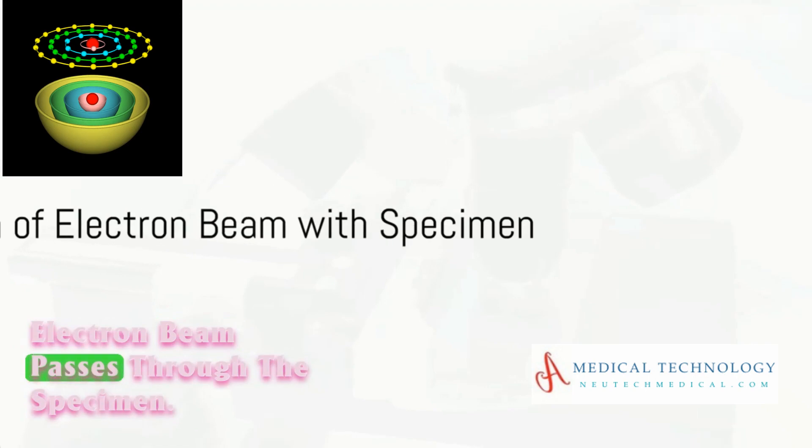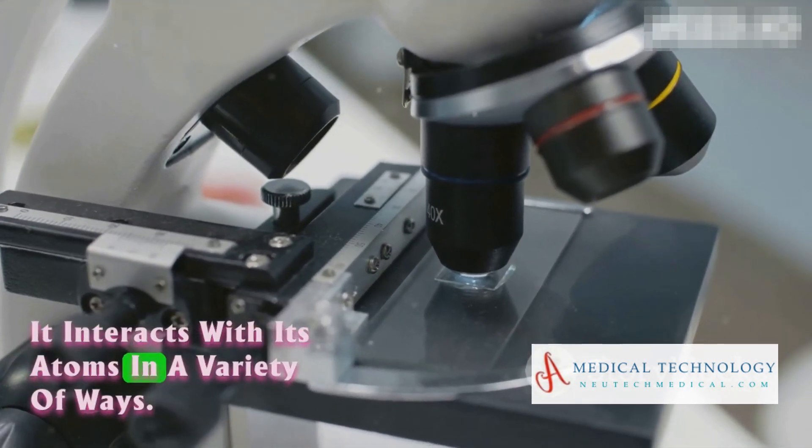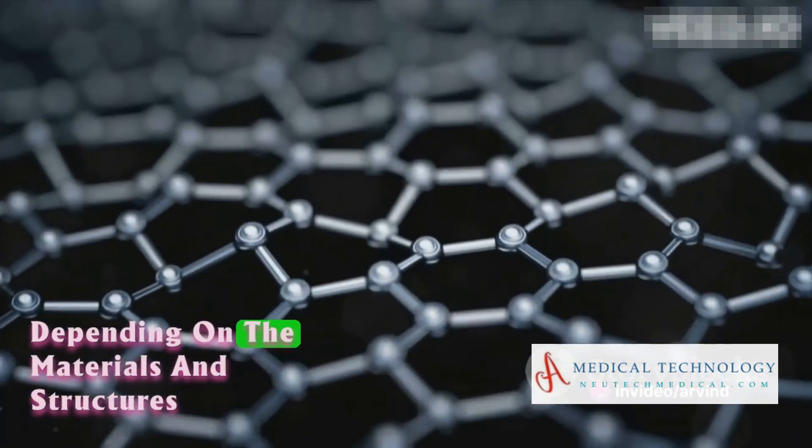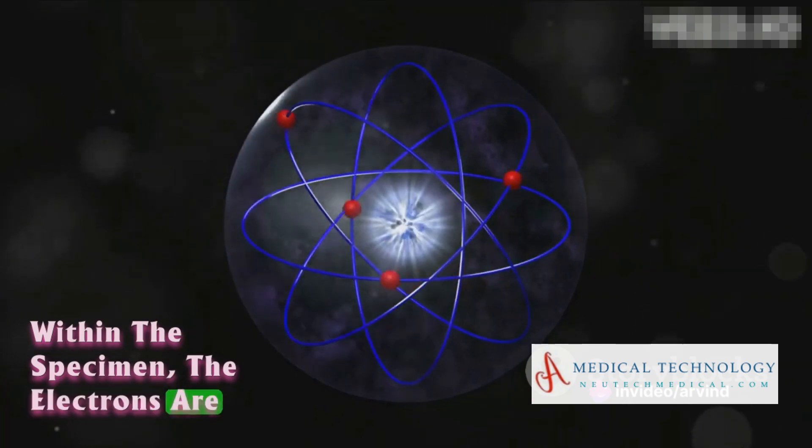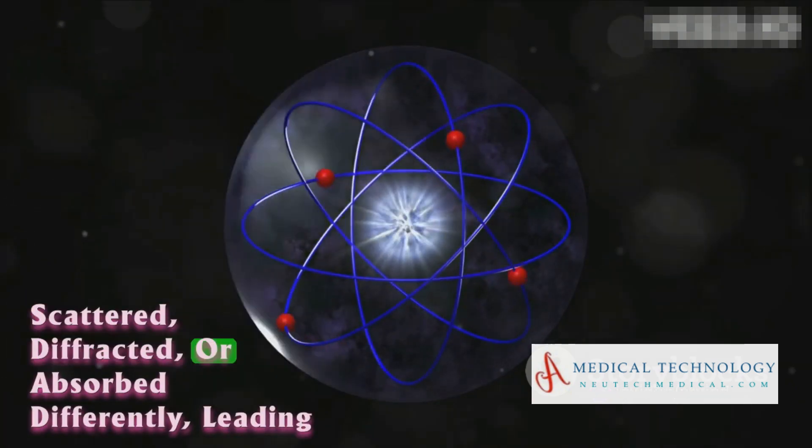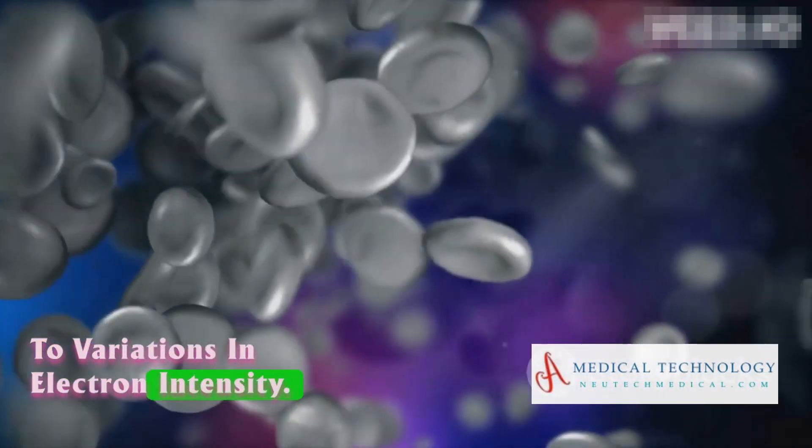As the electron beam passes through the specimen, it interacts with its atoms in a variety of ways. Depending on the materials and structures within the specimen, the electrons are scattered, diffracted, or absorbed differently, leading to variations in electron intensity.